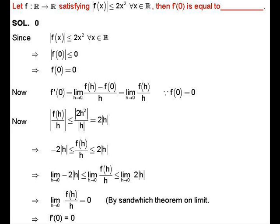By the definition of derivative at a point, f'(0) = lim_{h→0} [f(h) - f(0)]/h = lim_{h→0} f(h)/h, since f(0) = 0. Now we want to find the value of this limit.